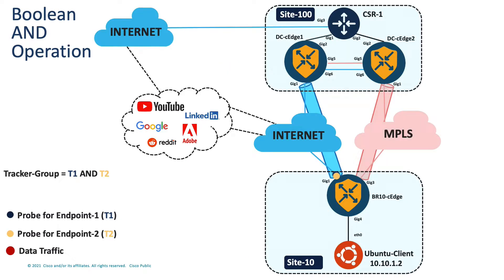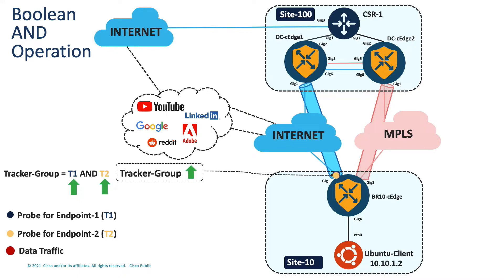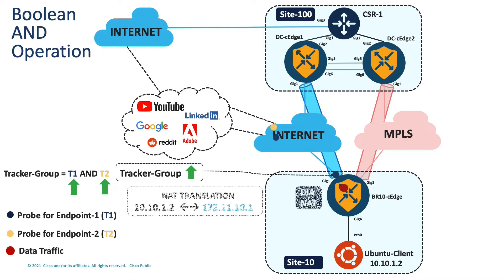Let's now visualize how the boolean AND operation works through this representation. Here we have two probes for endpoint 1 and endpoint 2 that are called under each tracker T1 and T2 respectively. The tracker group is then subjected to an AND operation for the individual trackers. The router sends two probes from the GIG1 interface, each tracking their own respective endpoints. Since replies are received by the router, the tracker status of T1 and T2 remains up. As a result, the tracker group status also remains up and data traffic gets forwarded through the DIA interface, Gigabit Ethernet 1.